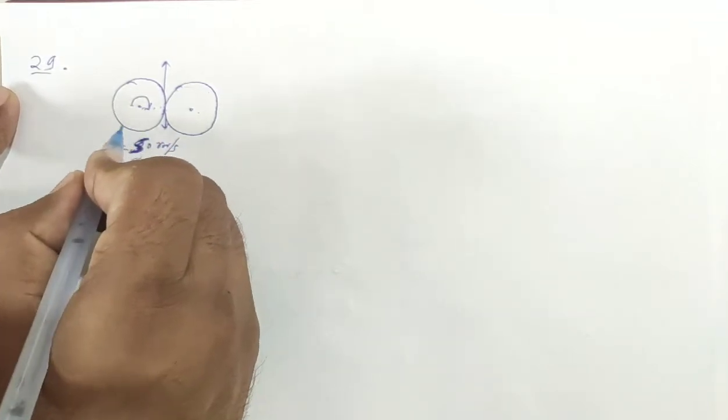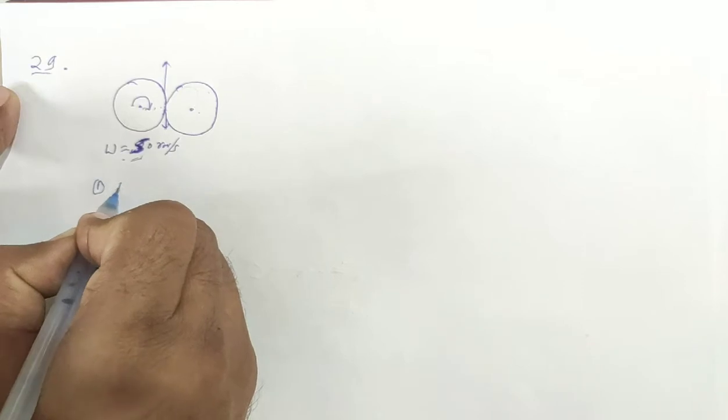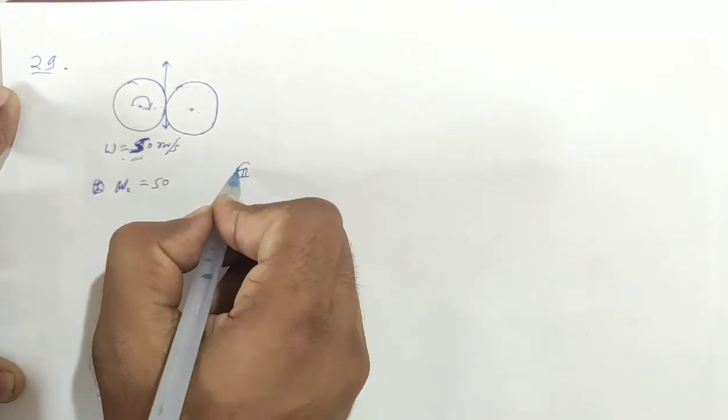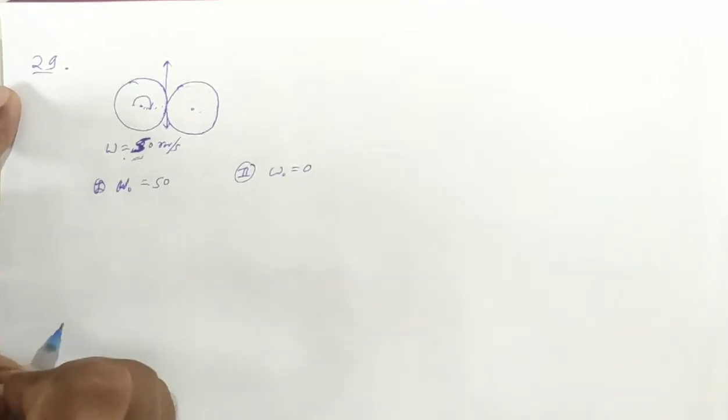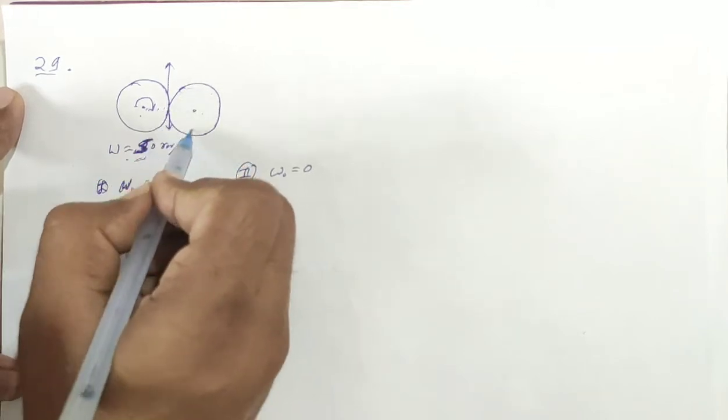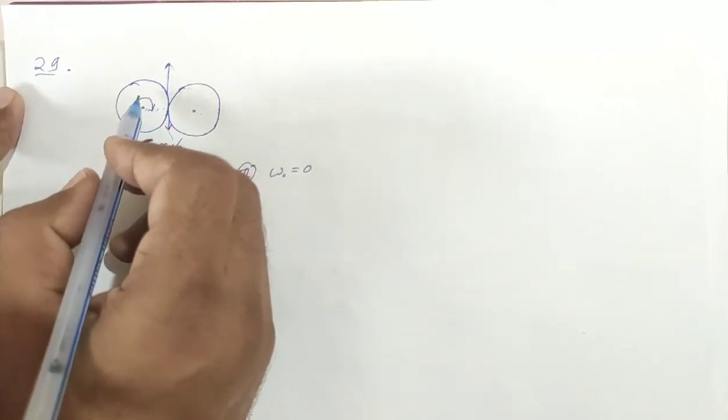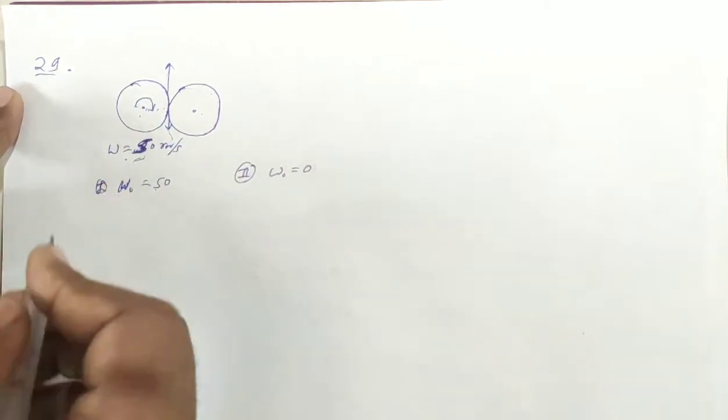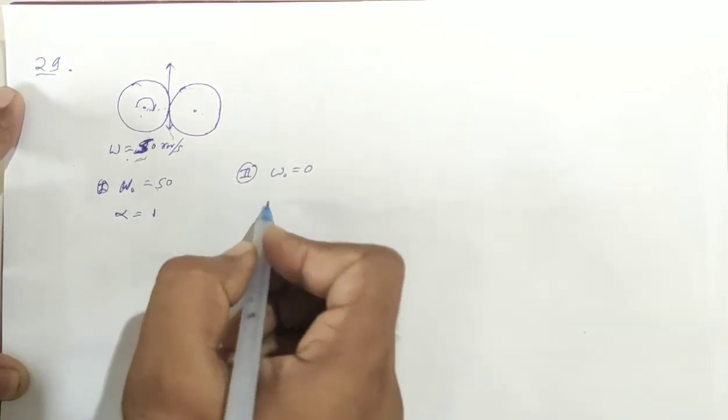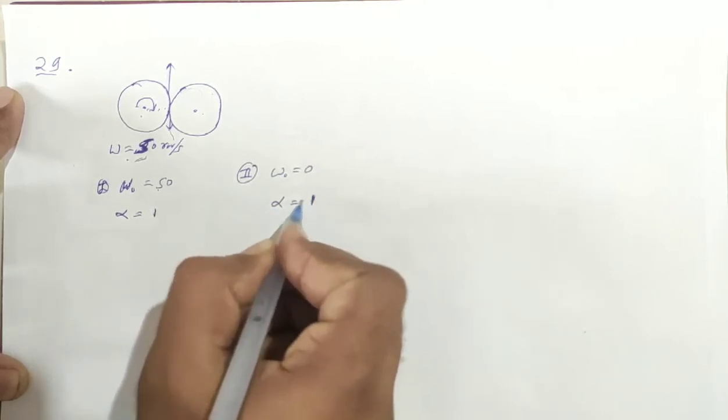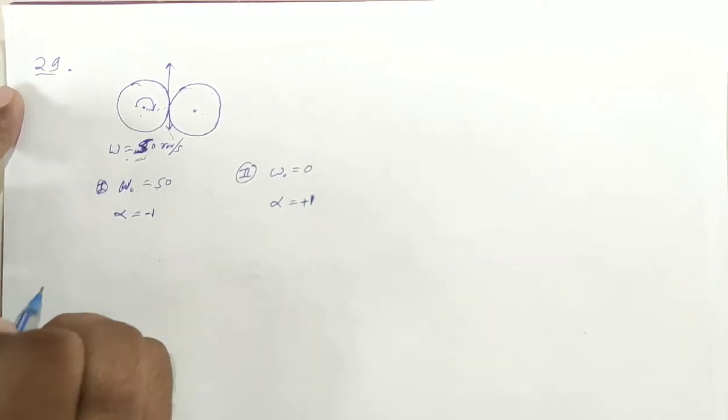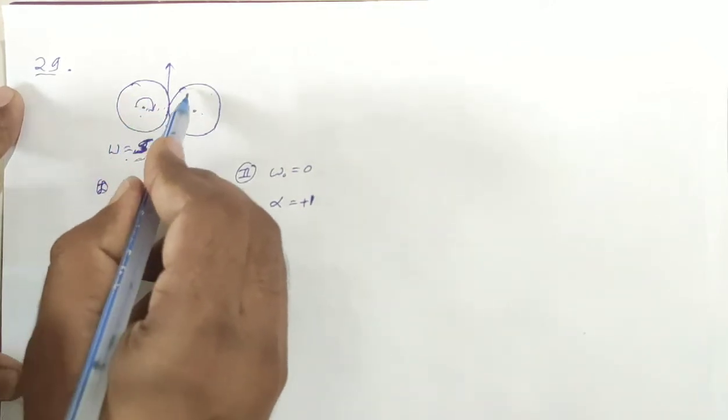Okay this is the initial speed. The first cylinder's initial speed omega naught is 50, the second cylinder's initial speed is zero. Now we have acceleration and de-acceleration. The magnitude is the same. What is the magnitude? The acceleration is minus sign and the acceleration is plus sign. Now how long until both angular speeds are the same?